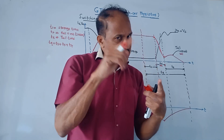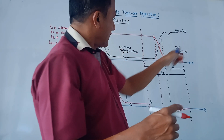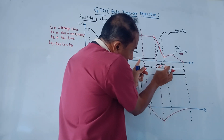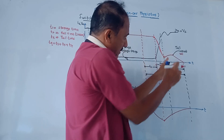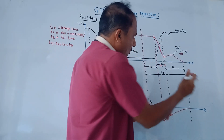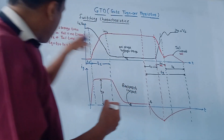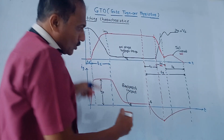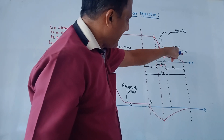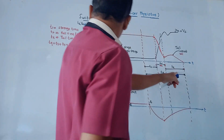After fall time tf, there is a tail current period. To switch off the GTO completely, the anode current must reach zero and anode voltage must remain at the source voltage Vs. After tf, there is a sudden change in slope and the anode current takes some time to reach zero — this time period tt is called the tail time.